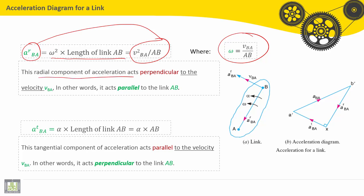This radial component of acceleration acts perpendicular to the velocity V_BA. So, it acts parallel to the link AB.